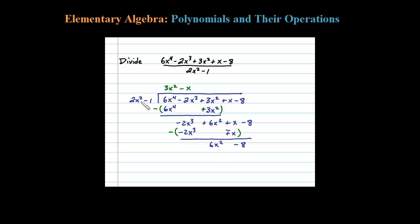Let's try to match 6x squared this time. What times 2x squared is 6x squared? Plus 3 should do it — 3 times 2x squared is 6x squared, and 3 times negative 1 is minus 3. Then you subtract: 6x squared minus 6x squared is zero, and distributing the negative means we're really adding 3, so negative 8 plus 3 is negative 5.